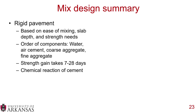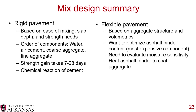In summary, rigid pavement mix design is based on ease of mixing, slab depth, and strength needs — with components selected in this order: water, air, cement, coarse aggregate, fine aggregate. Strength gain takes 7 to 28 days, and hydration is critical. Flexible pavement mix design is based on aggregate structure and volumetrics; the asphalt binder content is optimized because it is the most expensive component. Moisture sensitivity must be evaluated, and the asphalt binder must be heated to coat the aggregate.